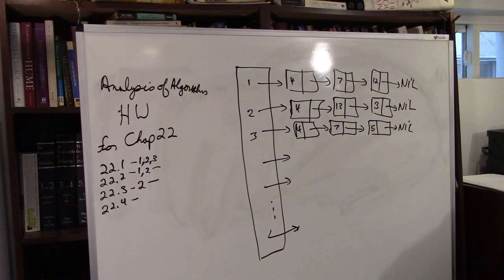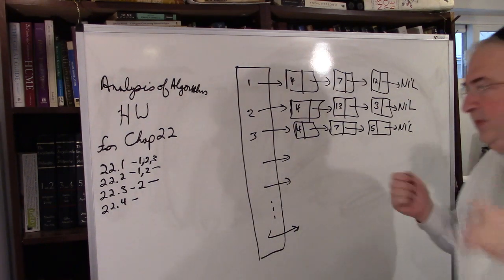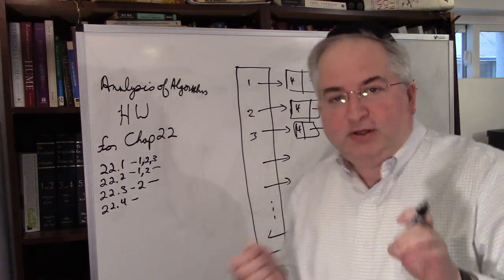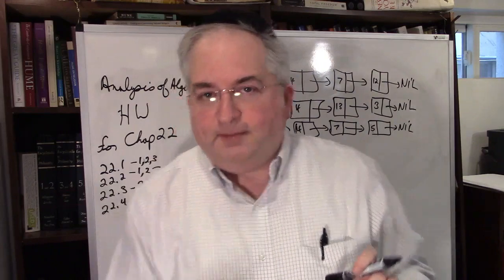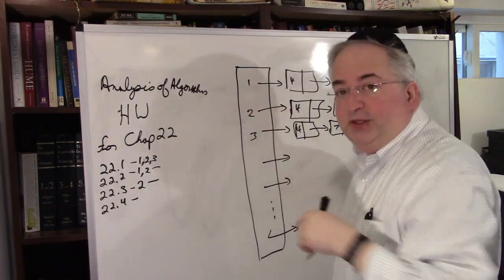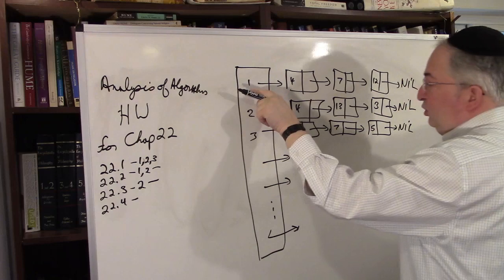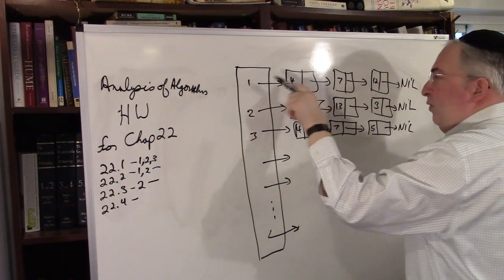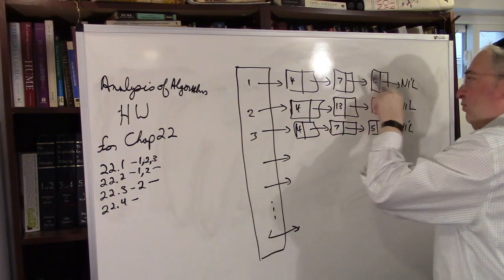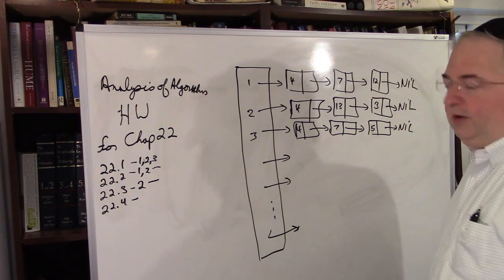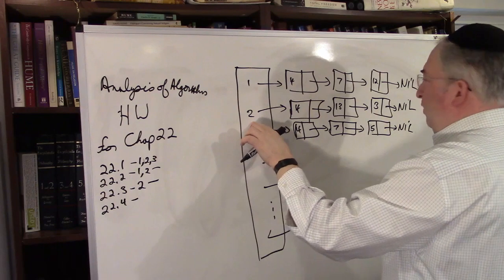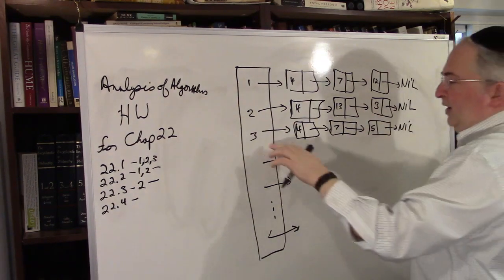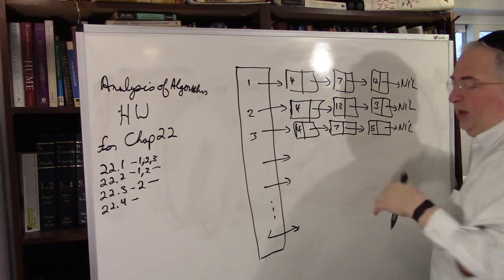Now let's go through the question. Given an adjacency list, how long does it take to compute the out-degree of each vertex? Out-degree is fairly simple. You traverse the list and count how many things come out of a vertex: 1, 2, 3 — there are 3 guys coming out. How many are coming out of here? 1, 2, 3.